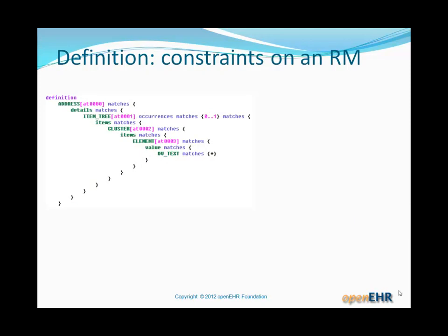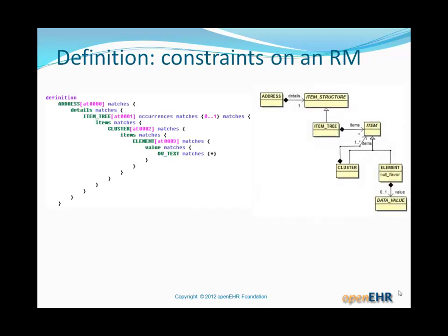Let's dive in and think about the definition of the archetype, because this is the intellectually difficult bit. The first, basic way of thinking about it is that it's constraints on a reference model. A reference model — an example is visible on the right as a UML model — is a normal information model. It's an address whose details are some sort of structure. One of the subtypes of the structure is called ItemTree. It has pieces inside which are clusters and elements — subclasses of an abstract class called Item. Elements contain a 'value' attribute of type DataValue, which has numerous descendants such as dates, times, booleans, texts, quantities, and so on.